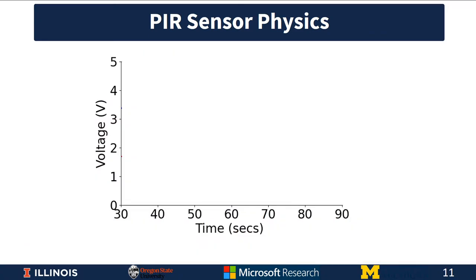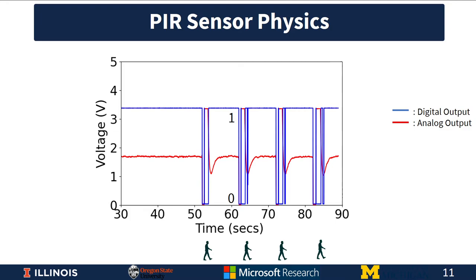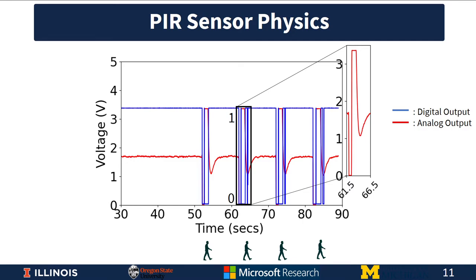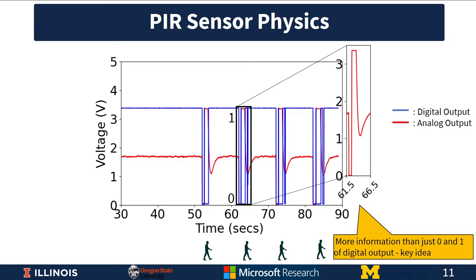Let us look at these two outputs visually. The graph shows voltage on the y-axis and time on the x-axis, with an obstacle passing periodically through the field of view. The digital output, shown in blue, jumps from 1 to 0 upon detection of an obstacle. The analog output, shown in red, executes a U-shaped oscillation. This U-shaped oscillation contains more information than just the zeros and ones of the digital output, and this is the key idea behind the design of PAR Medic.